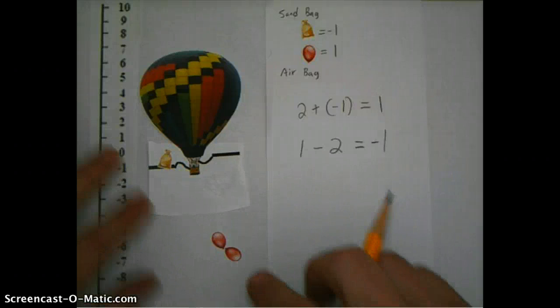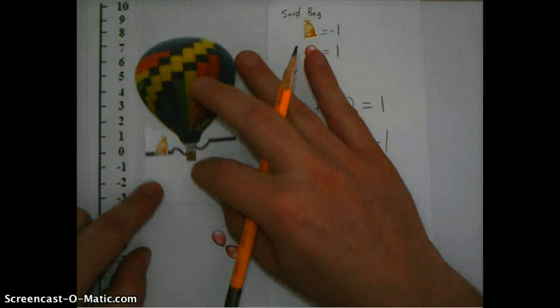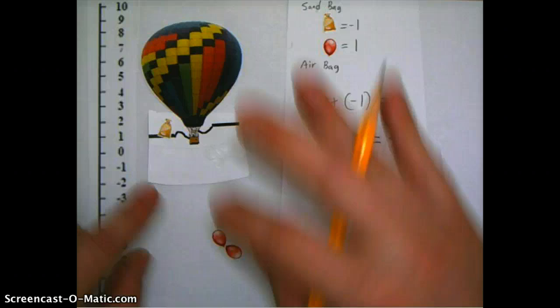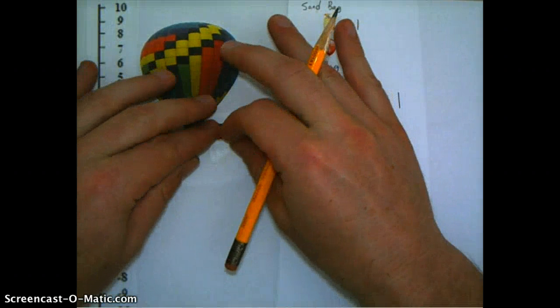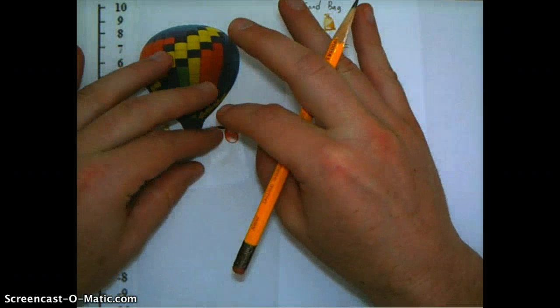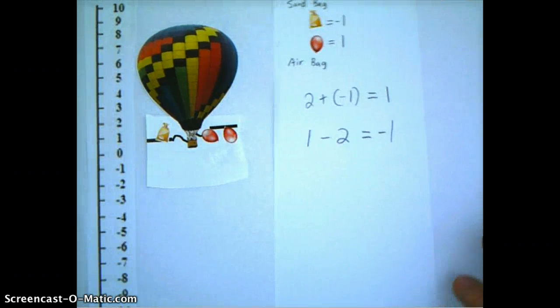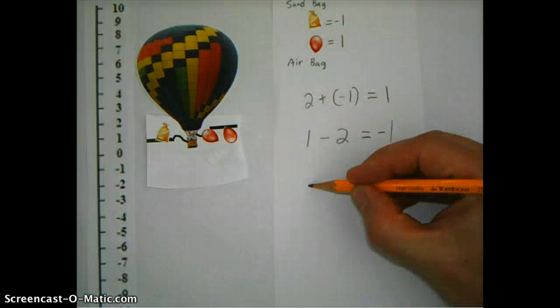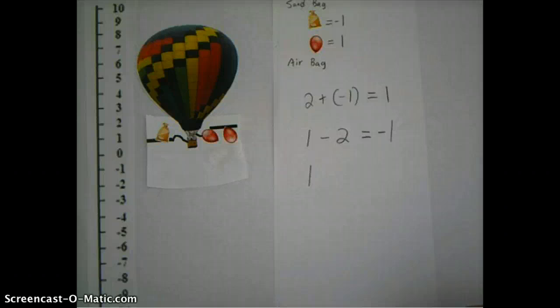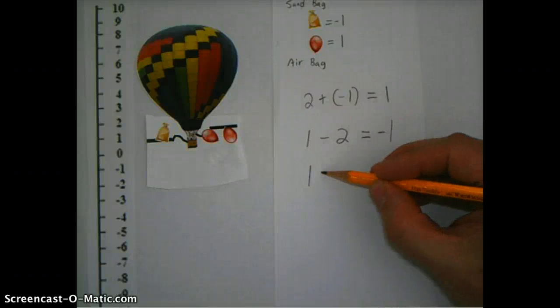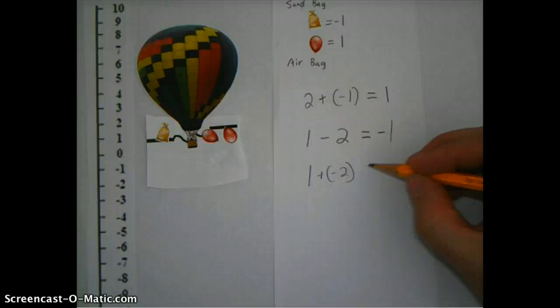Or let's say I started back at one again. The other option I could have done to get to the same place was I could have taken that same altitude starting of one, and I could have, instead of taking away two of the airbags, I could have added two sandbags, which each have a value of minus one. So I'm adding a value of minus two.